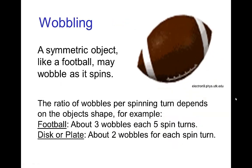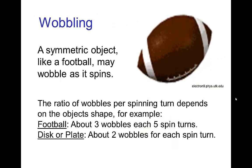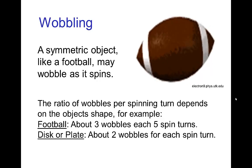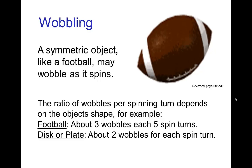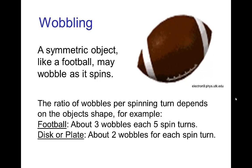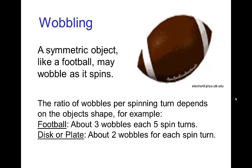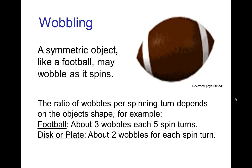Now if we have an object that is symmetric like a football, so the football has a long axis but then around that axis the football is symmetric, then it doesn't tumble, but when it spins it can wobble. So you see that if you ever throw a football, you know that it can go into this type of wobbling motion.